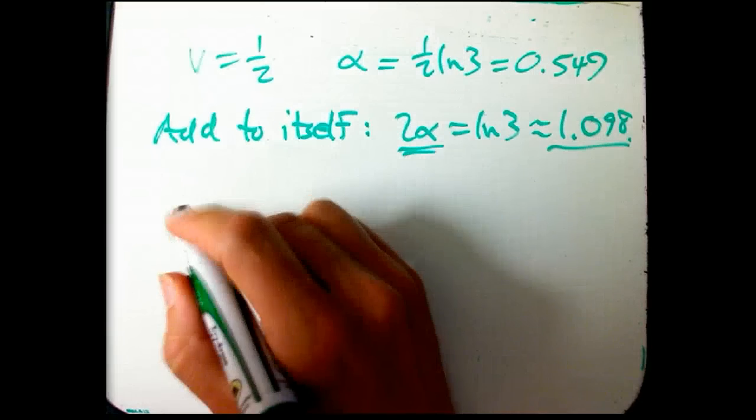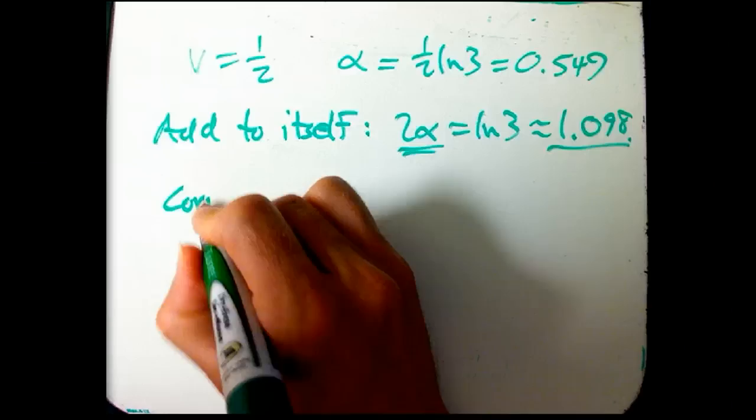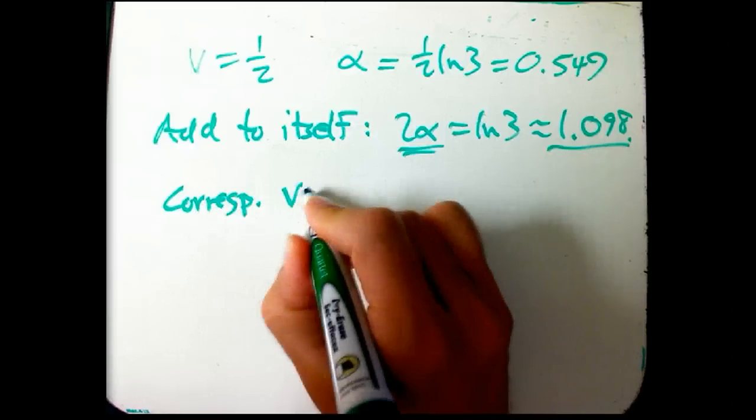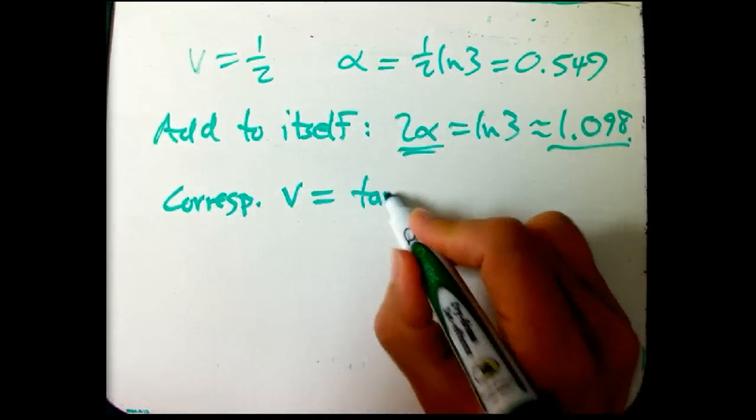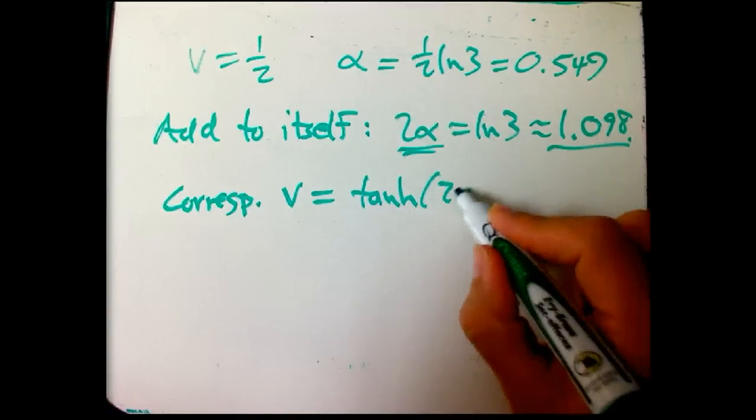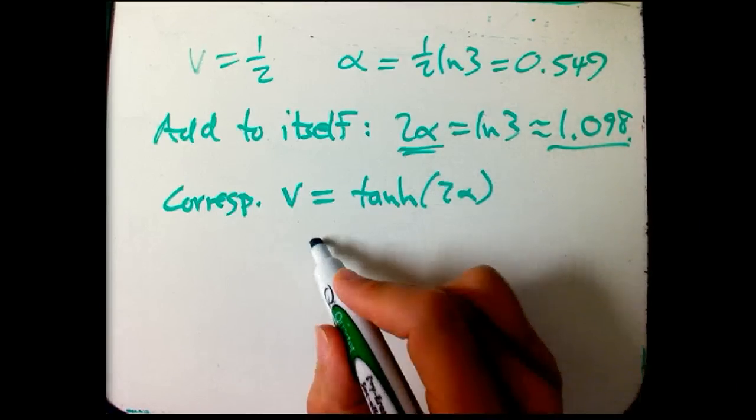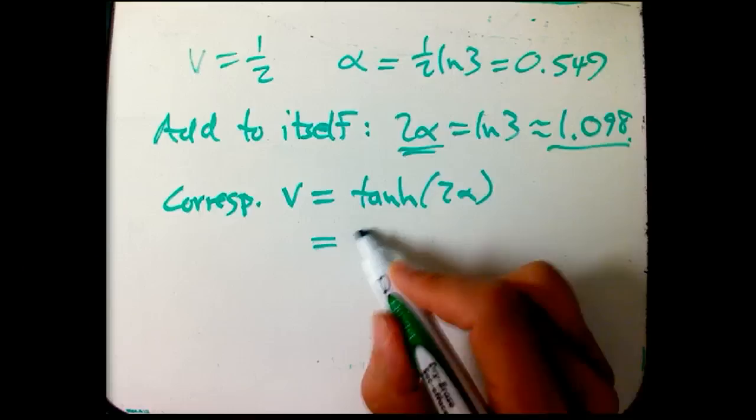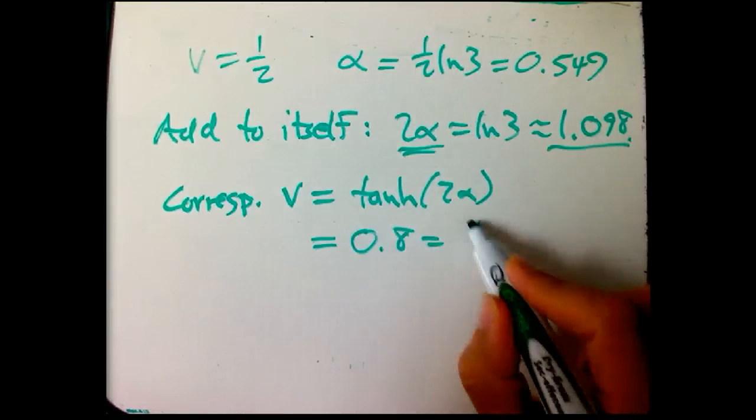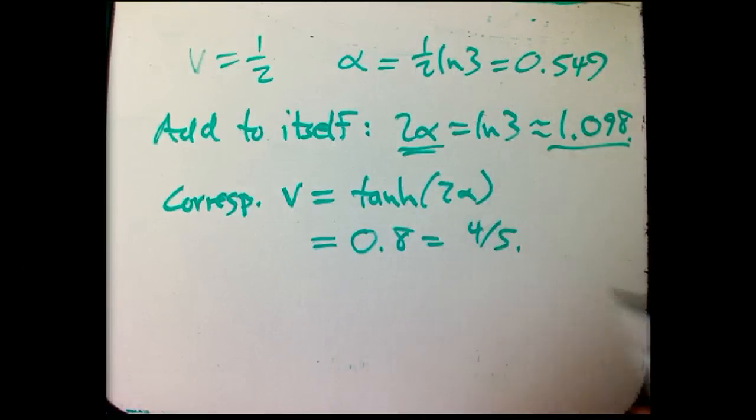If we really wanted to get back to the corresponding velocity, the corresponding V, remember, that's the hyperbolic tangent of now the doubled alpha. And if you plug that in, it does come out to be 0.8. Our earlier calculation confirmed that that was supposed to be 4/5.